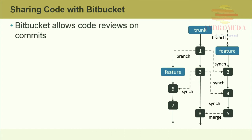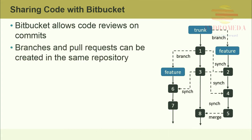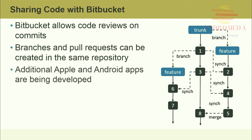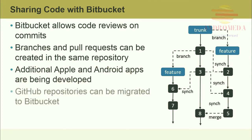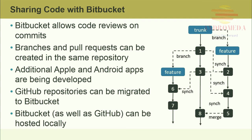Bitbucket also has more authentication support such as Twitter and Facebook. Bitbucket allows code reviews on commits, and branches and pull requests can be created in the same repository. Bitbucket also allows you to create and manage multiple file code snippets, text, and multimedia assets. Most support is for the traditional desktop, however; additional Apple and Android apps are being developed. GitHub repositories can be migrated to Bitbucket. Both Bitbucket and GitHub can be hosted locally. Bitbucket's behind-the-firewall Git repository solution is called Stash, which allows you to create and manage repositories, set up custom permissions, and connect via LDAP. New features of Bitbucket include upgraded diff functionality and support for emojis.